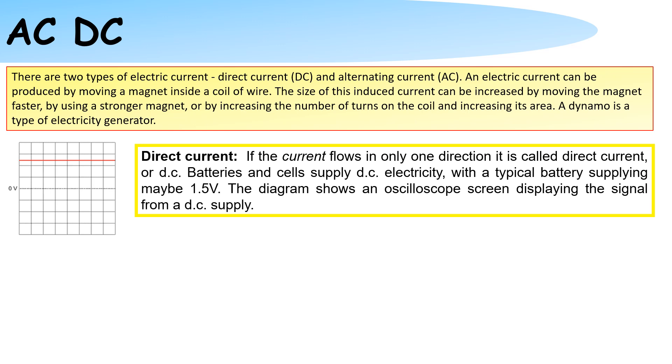If the current flows in only one direction it is called a direct current. Batteries and cells supply a direct current, with a typical battery supply maybe 1.5 volts.